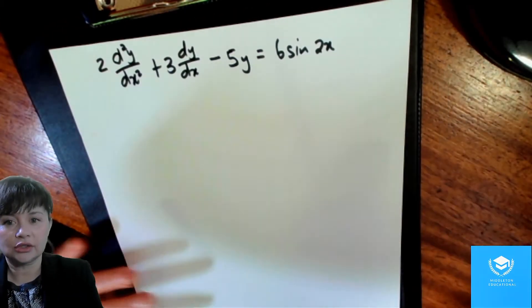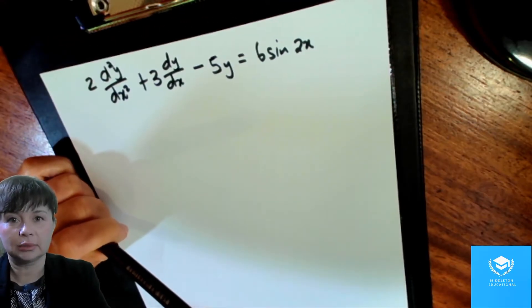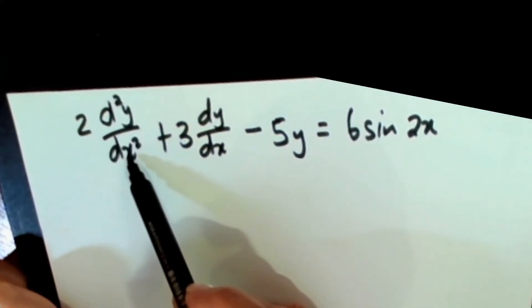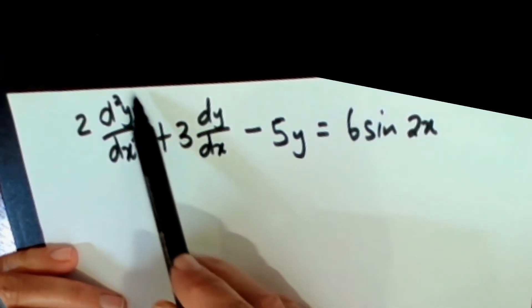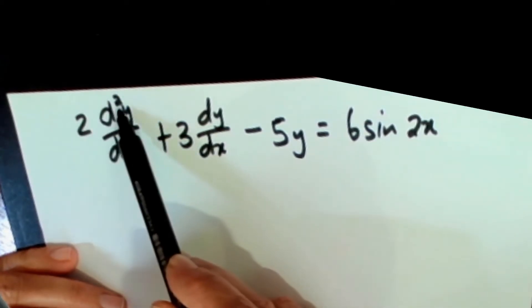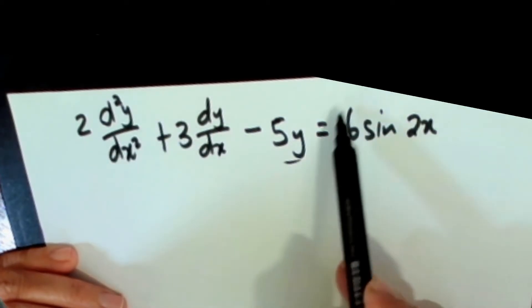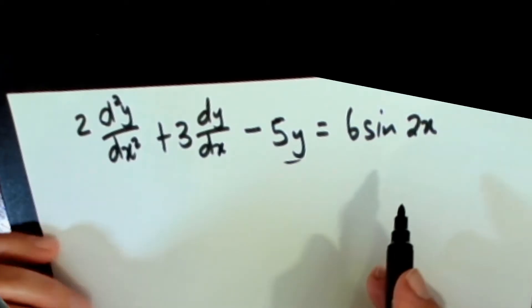So this is the example we're looking at today. We have our dependent variable is y and your independent variable is x. You know you've got a second order differential equation because the highest derivative is a second order one and your function your left hand side of the equation is equal to a function 6 sine 2x which means that you're working with a non-homogeneous differential equation.